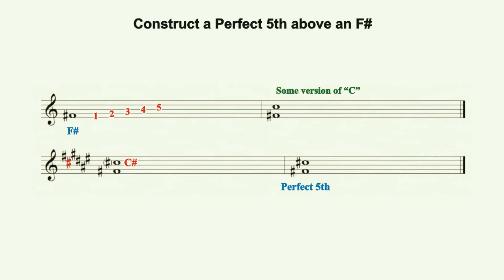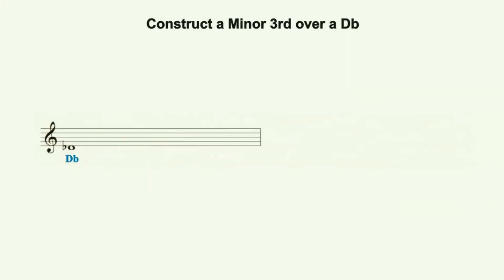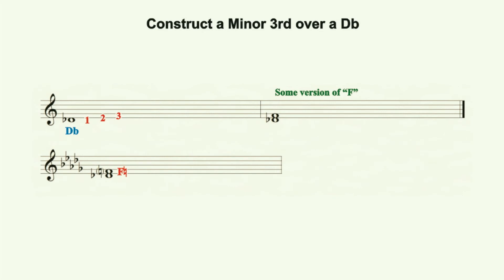Let's build a minor 3rd over a D flat. Notate the D flat where desired. With the D flat labeled as 1, count upward 3 spaces and lines. Our 3rd will be some version of F. The key signature for D flat major, 5 flats, tells us that our diatonic version of F occurs as an F natural. We recall that the diatonic 3rd in any major key is a major 3rd. Since we want to construct a minor 3rd and our diatonic 3rd is major, we need to modify the F natural by lowering its pitch one half step to an F flat.